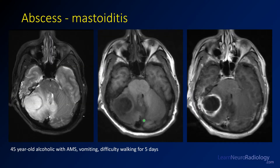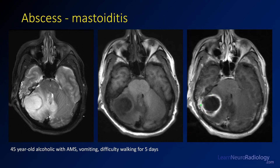On MR from that patient, the intracranial findings are much worse than on CT. On T2 you have a very bright fluid collection along the lateral margin of the cerebellum, tons of edema in the adjacent cerebellar hemisphere, and a lot of mass effect on the fourth ventricle which is displaced to the left. There is also a lot of fluid in the mastoid air cells. On pre-contrast imaging the collection is very dark centrally, with a lot of peripheral enhancement on post-contrast.